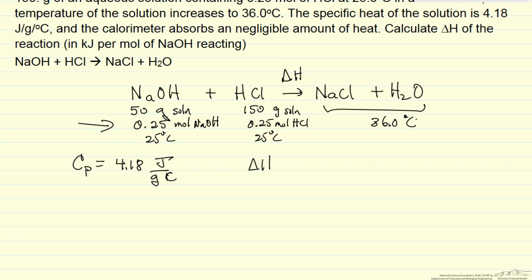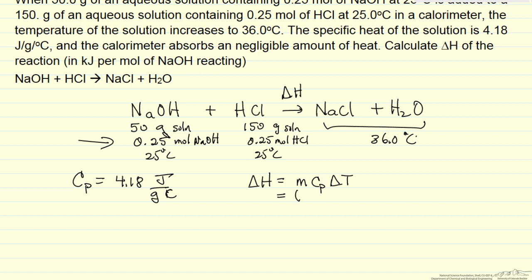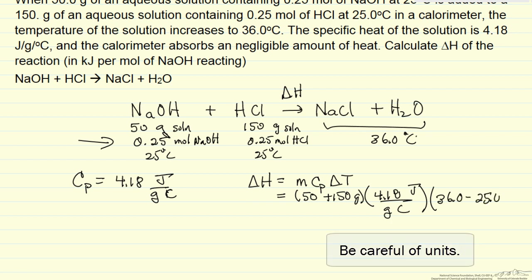Delta H for this process is the mass times specific heat times the temperature difference. So the total mass is 50 plus 150 grams, the heat capacity is 4.18 joules per gram per degree C, and the temperature change is 36 minus 25. And so we can calculate delta H for the reaction that takes place.